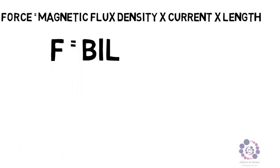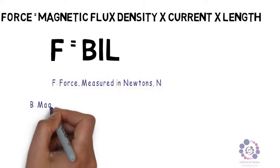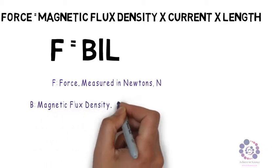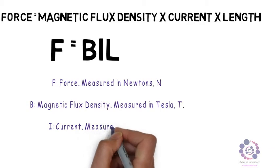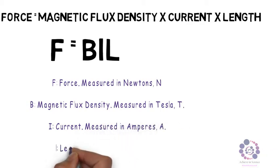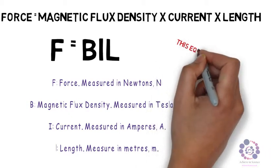F equals BIL, where F stands for force measured in Newtons (N), B stands for magnetic flux density measured in Tesla (T), I stands for current measured in amperes (A), and length is measured in meters, given the symbol L and the units m.